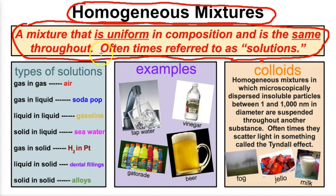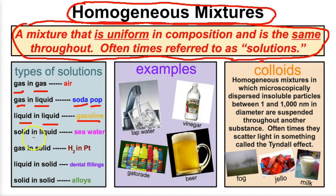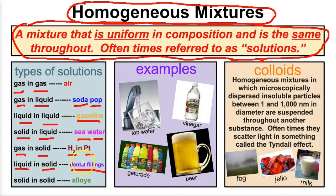There are all kinds of different types of solutions. Gas-in-gas, like the air we're breathing. Gas-in-liquid, like soda pop — carbon dioxide gas dissolved in that sugar water mixture. Liquid-in-liquid, like gasoline — two or more different hydrocarbons mixed together. Solid-in-liquid, like salt dissolved in water to make ocean water. Gas-in-solid, like hydrogen dissolved in platinum. Liquid-in-solid, like old dental fillings where liquid mercury is mixed with silver. And solid-in-solid, like alloys — two or more metals mixed together.